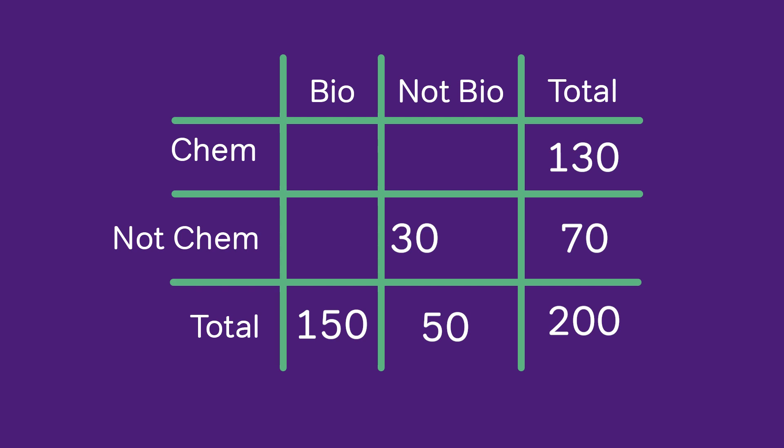There are only 50 people not in biology total, and so that would have to be the maximum for it. It couldn't be higher than that, but it could range from 30 to 50. And if it ranged from 30 to 50, the people who are not in biology would range from 0 to 20. The people who are in bio but not in chem would range from 20 to 40.